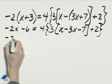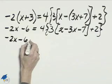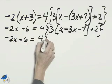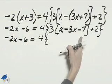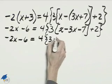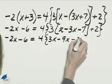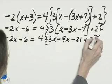Next, keeping this on the left, negative 2x minus 6. On the right, let's multiply through by 3. We'll have 3x minus 9x minus 21 and then plus 2 at the end.